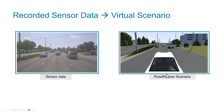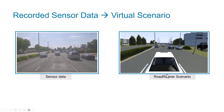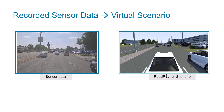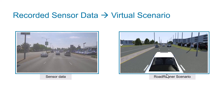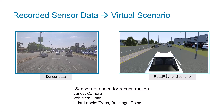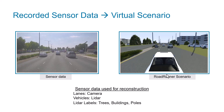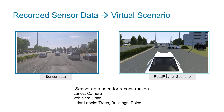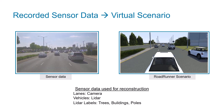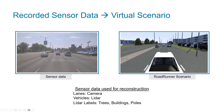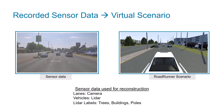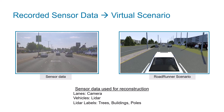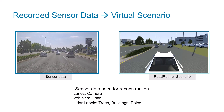Now let's dive into an example on how you can bring virtual scenarios to life using recorded sensor data. In this demonstration, we used camera data to extract lanes, raw lidar data to extract vehicles, and labeled lidar data to extract roadside objects such as trees and buildings.